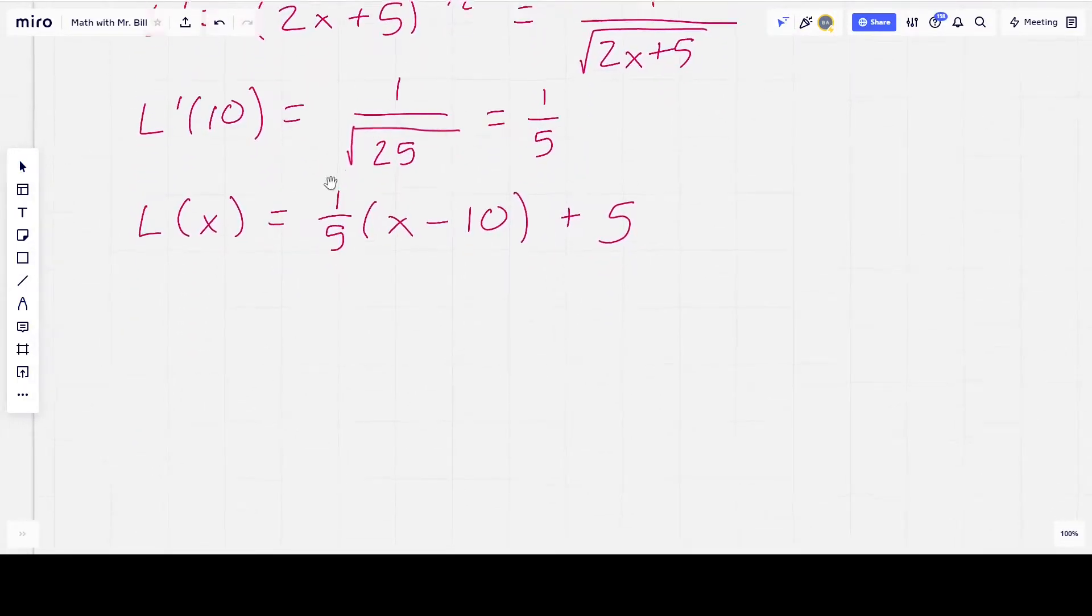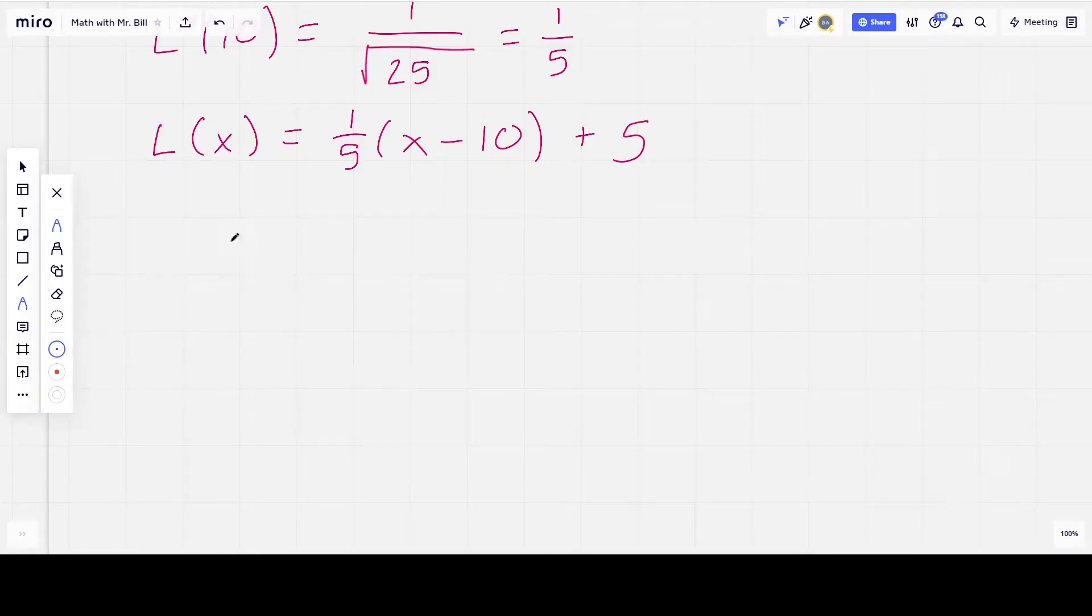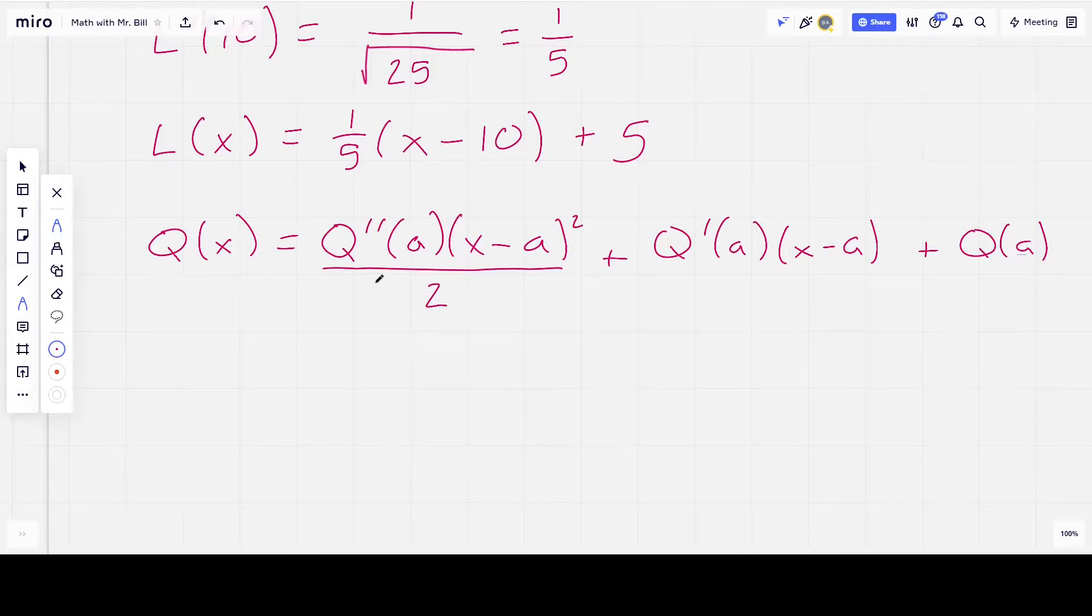And now, let's take a look at the quadratic extension. So, the quadratic extension, we can call that Q for quadratic. Kind of like the idea of calling it Q, just to give it a new name. So, Q(x) is going to be equal to our quadratic term, which is Q double prime of a times (x minus a) squared. And then we have to, for reasons, we have to divide this by 2, and then plus Q prime of a times (x minus a), and then plus Q(a). So, the reason why we divide that first term by 2, it has to do with the fact that we're constructing a Taylor series. Later on in second semester calculus, you'll find out what a Taylor series is, and you will find out why there's 2 down there.